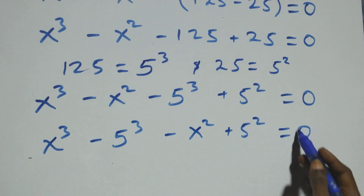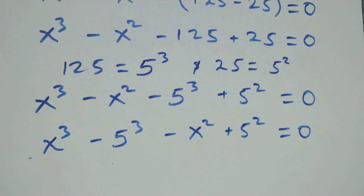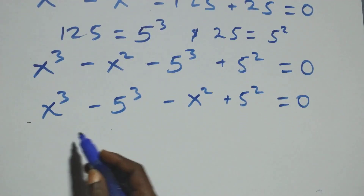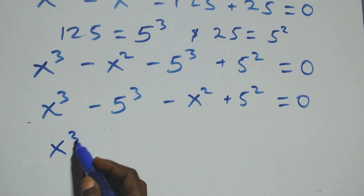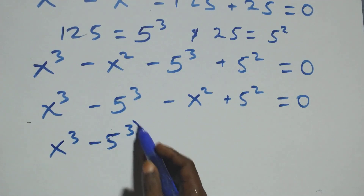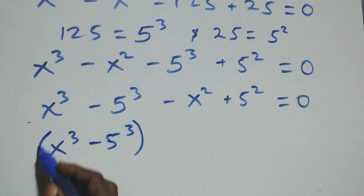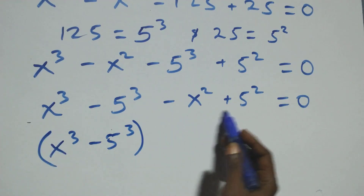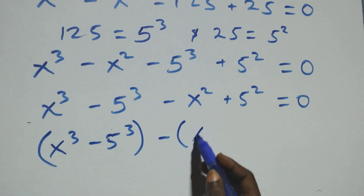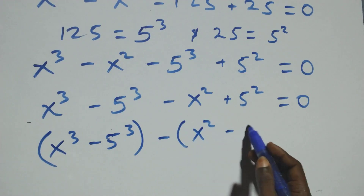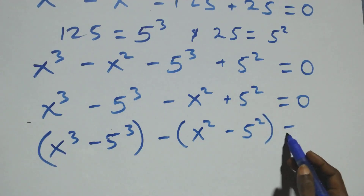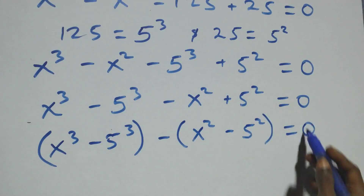Then here this is the same as x raised to the power 3 minus 5 raised to the power 3, in brackets. Then minus is common here — we factor it and we have minus in brackets, x raised to the power 2 minus 5 raised to the power 2, close brackets, equals to 0.